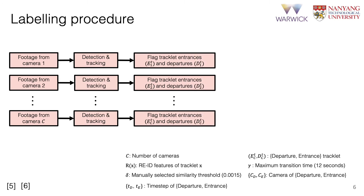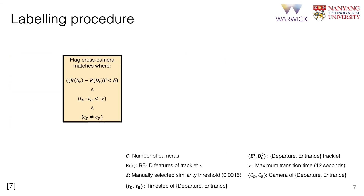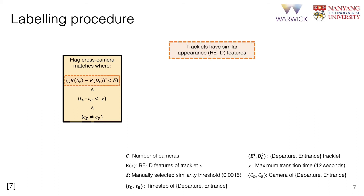We then flag entrance and departure tracklets. We define an entrance as the first 20 frames of a track, and a departure is similarly defined as the last 20 frames of a track. Next, we search for cross-camera matches and manually verify that these proposed matches are correct. We use three criteria to find cross-camera matches. To be a proposed match, two tracklets must have similar appearance features, computed using an off-the-shelf person re-ID model.